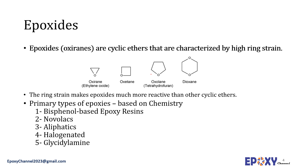Based on chemistry, epoxy resin systems can be divided into the following classes: one, bisphenol-based epoxy resins; two, novolacs; three, aliphatics; four, halogenated epoxies; and five, glycidyl amines. These systems are introduced in the following slides in brief.